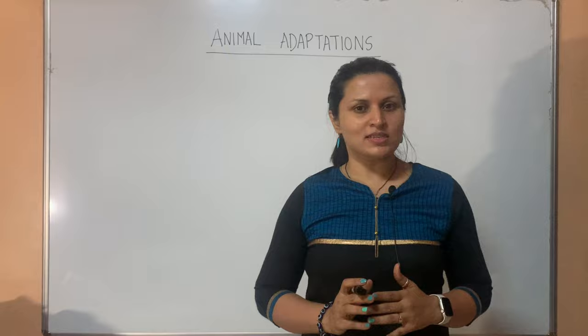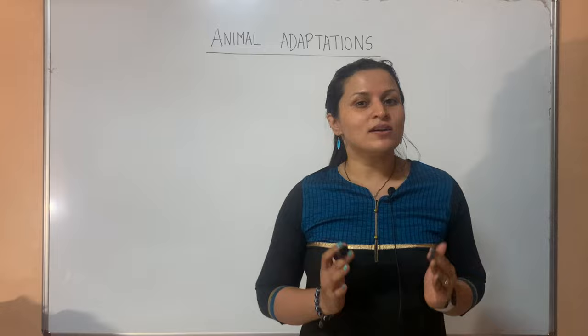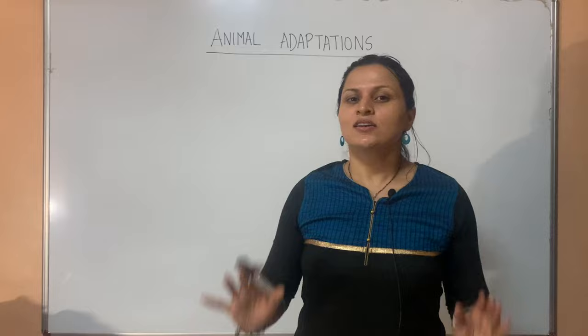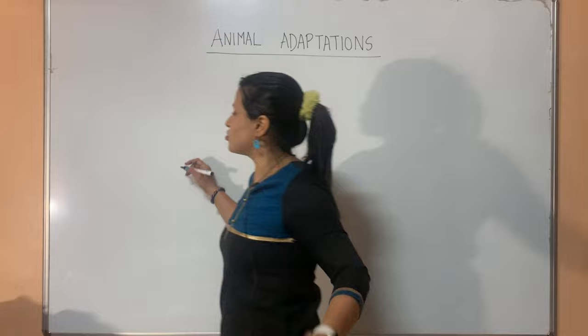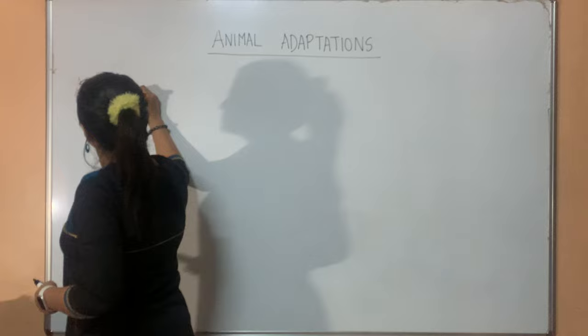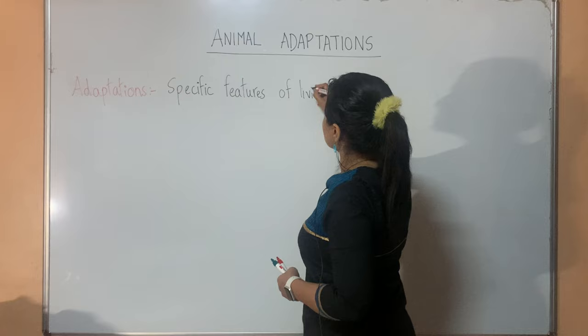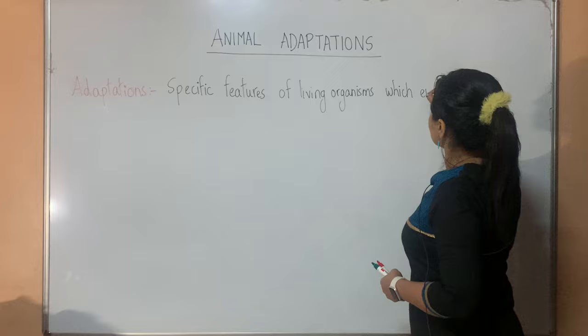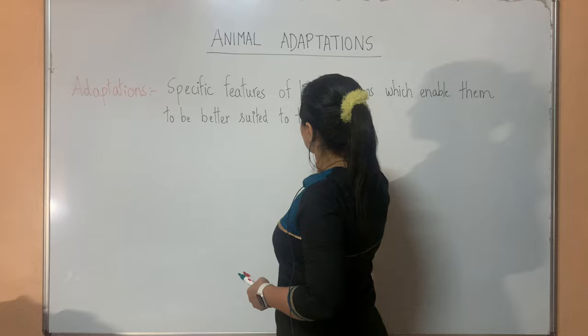Likewise, every animal you see around you will have certain specific features which they have evolved over time, allowing them to be better suited for the environment they are living in. Such specific features are called adaptations. So the definition of adaptations is: specific features of living organisms which enable them to be better suited to their environment.